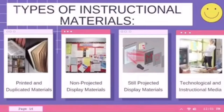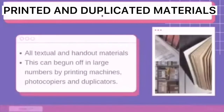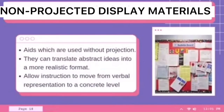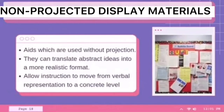Moving on, we have the types of instructional materials. There are four types: printed and duplicated materials, non-projected display materials, still projected display materials, and technological and instructional media. Printed and duplicated materials comprise all textual and handout materials to be used by students or trainees, which can be produced in large numbers by printing machines, photocopiers, and duplicators. Non-projected display materials are aids used without projection — they can translate abstract ideas into a more realistic format and allow instruction to move from verbal representation to a concrete level. The best examples are bulletin boards and blackboards.